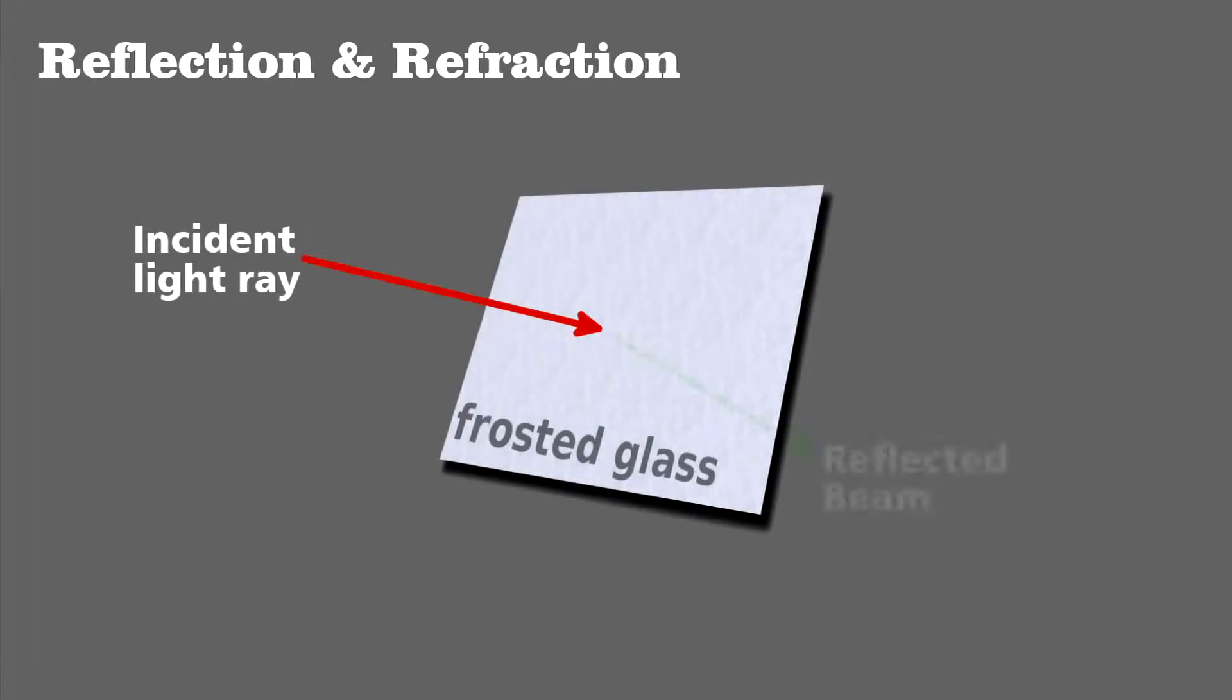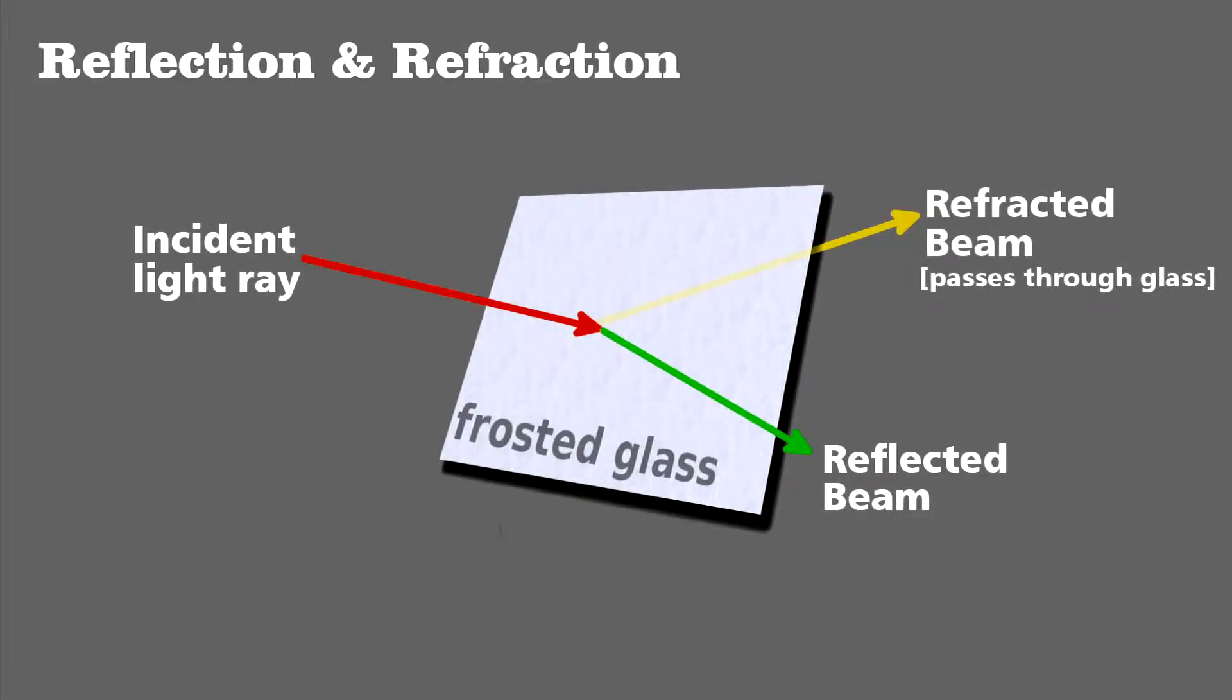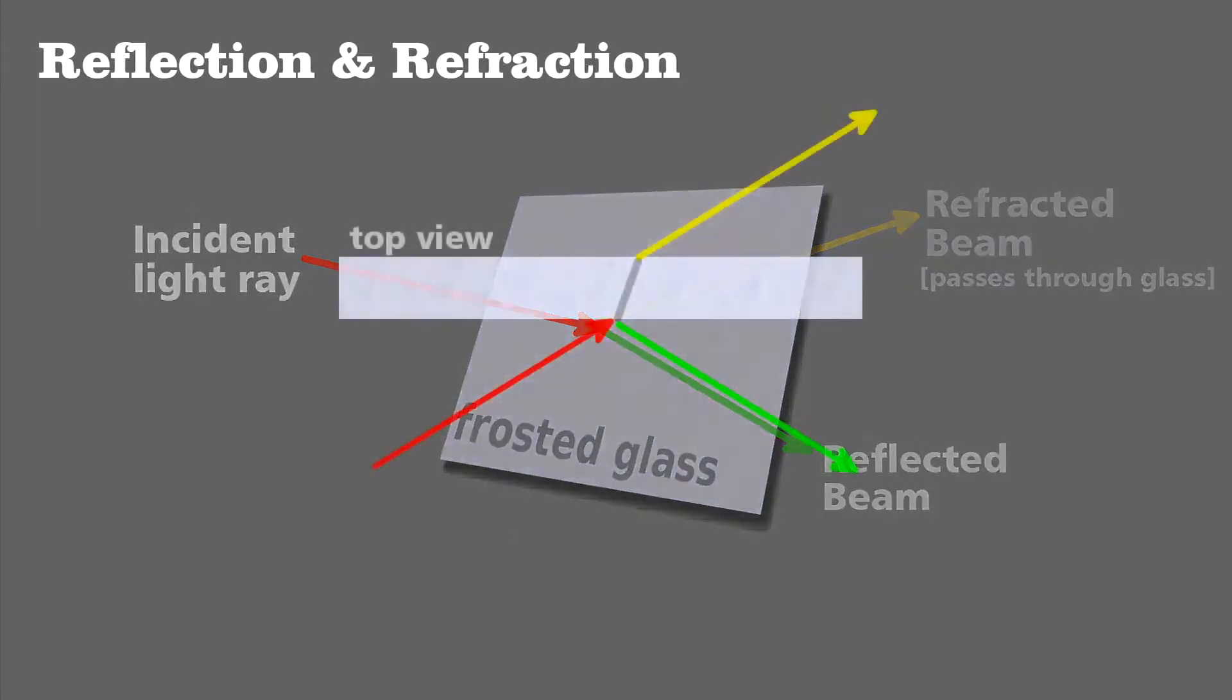Recall that any time light strikes a surface, it can either be absorbed by the material, reflected from it, or pass into and through it. The latter we call refraction. It's easier to see from a top view.